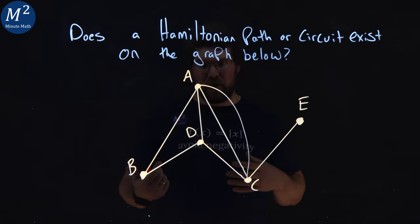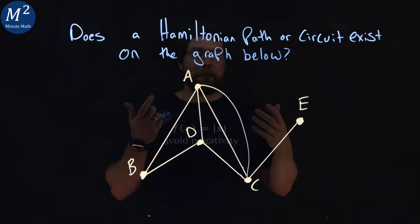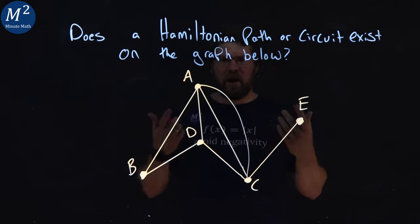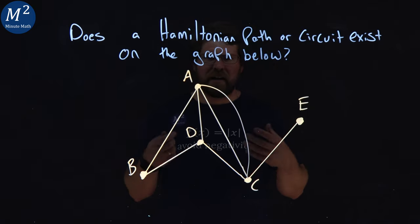What about a path? Well, actually in this graph there are many Hamiltonian paths, but let's go see if we can find one of them.